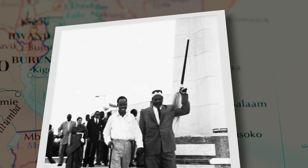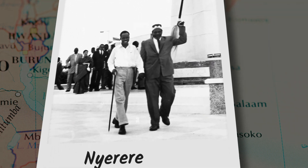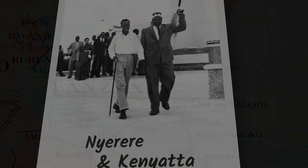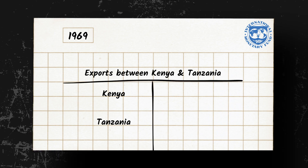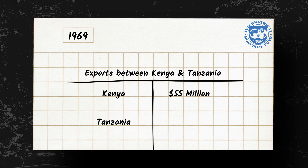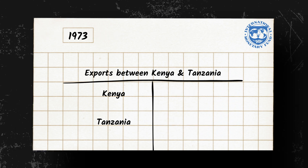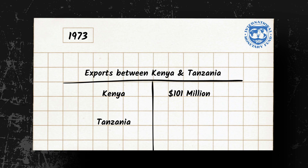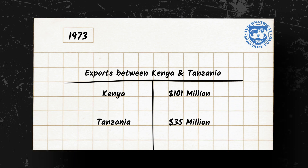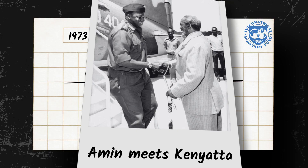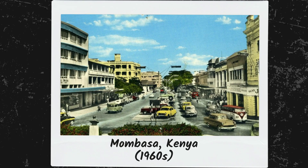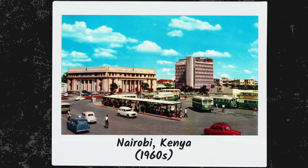President Julius Nyerere of Tanzania argued that the EAC should uphold the principle of equality among the member nations, with each having an equal say in the decision-making process. The trade imbalance between Kenya and its East African counterparts was another issue plaguing the EAC. According to data from the IMF, Kenya's exports to Tanzania in 1969 were valued at $55 million, while Tanzania's exports to Kenya were valued at just $26 million. By 1973, Kenya's exports to Tanzania had grown to $101 million, while Tanzania's exports to Kenya were valued at only $35 million. This trade imbalance was due in part to Kenya's more advanced industrial base, which allowed it to produce a wider range of goods for export.